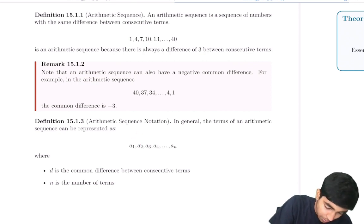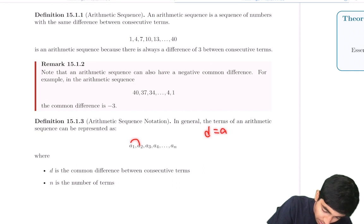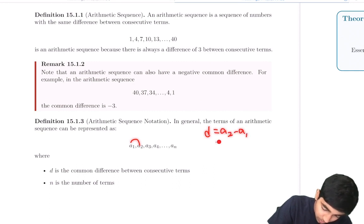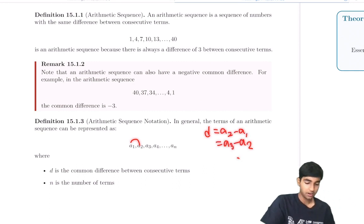So d, for example, would be a2 minus a1, a3 minus a2, and so on.